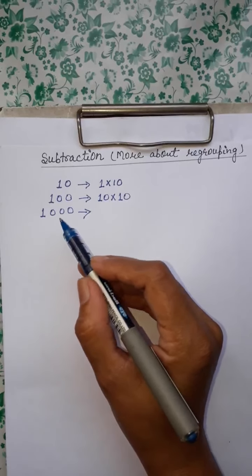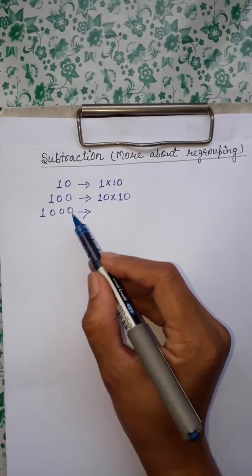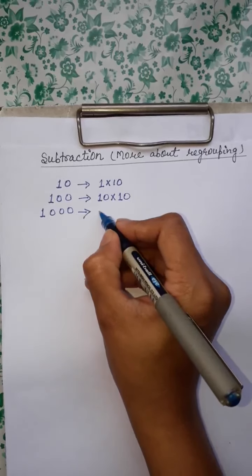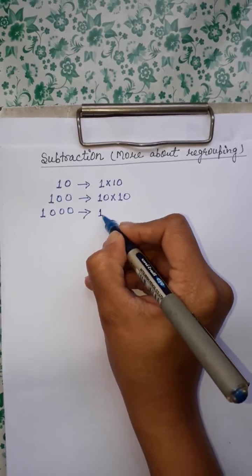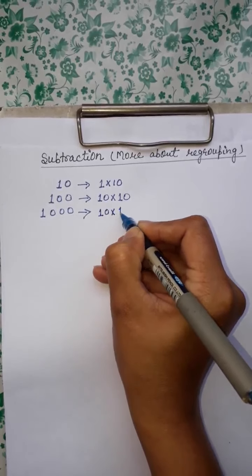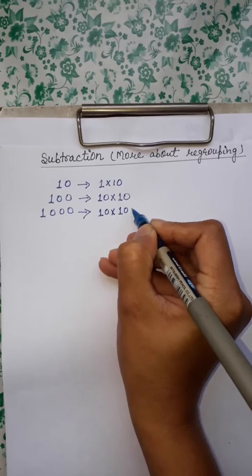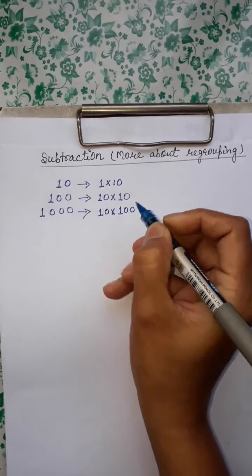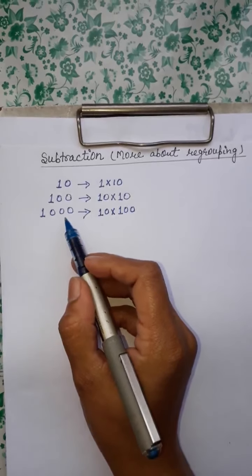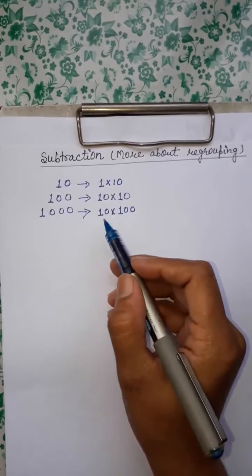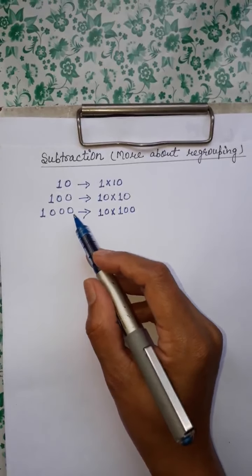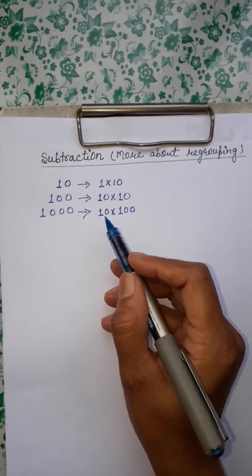Like that, when we are talking about 1000, what we will do? 10 times 100 makes 1000. When we add 10 times 100, we get 1000.